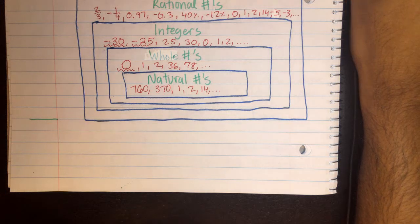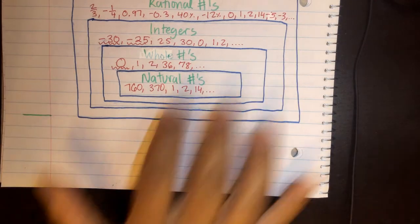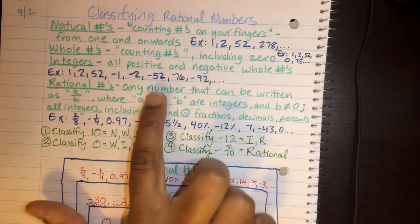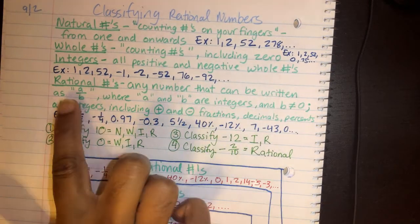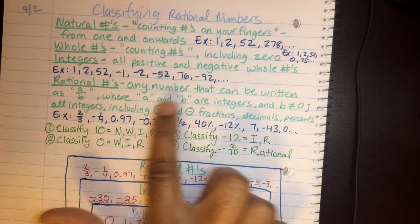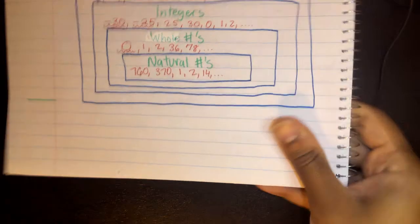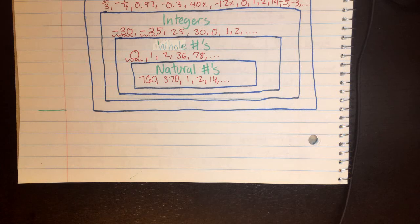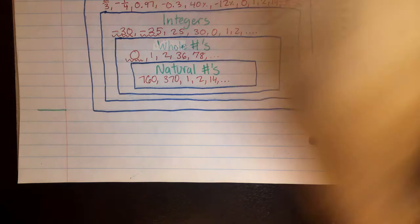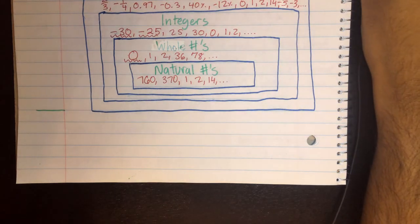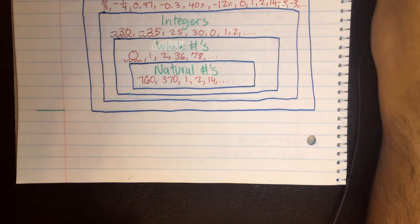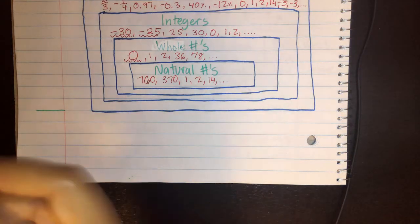Alright, remember yesterday we talked about how I looked back at our definition of rational numbers - any number that can be written as A over B, where A and B are integers and B cannot equal zero. So today, we're going to talk about fractions and how we can write division as a fraction, because that's the whole meaning of a rational number, right? I can write that division as a fraction.